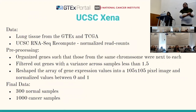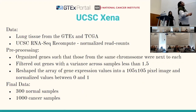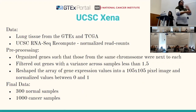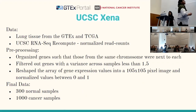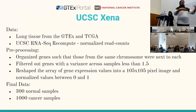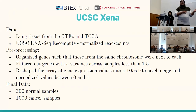We decided to focus on lung tissue, getting data from GTEx and TCGA. For pre-processing, in order to pass our data into our classifier, we first organized the genes such that those from the same chromosome were near each other. Then we filtered out genes with variance across samples less than 1.5, because we had such a large amount of genes and were limited in terms of computational power and time.